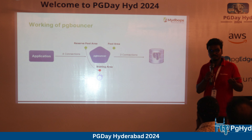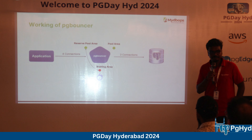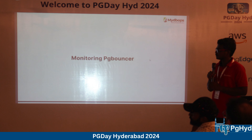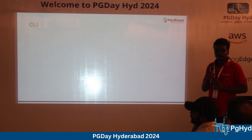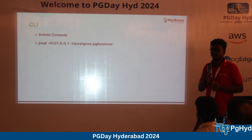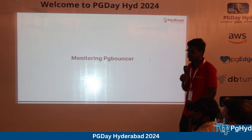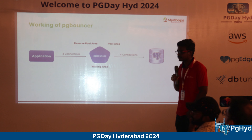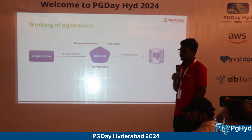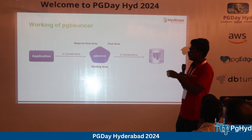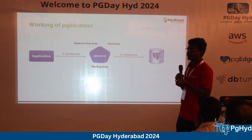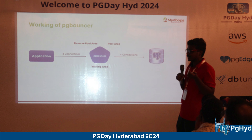The latency through PG Bouncer compared to a direct connection is very negligible. You can deploy PG Bouncer on the application server and connect via localhost through a socket or port. When compared with proxies like RDS Proxy, PG Bouncer has very low latency that is barely noticeable.